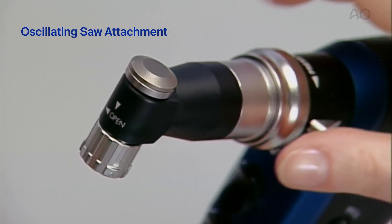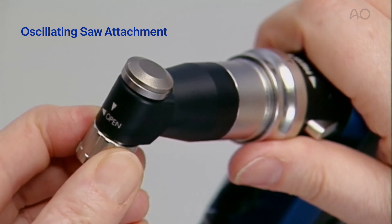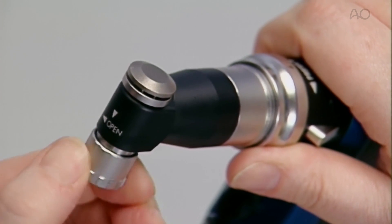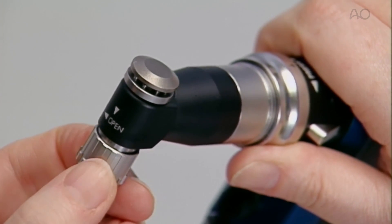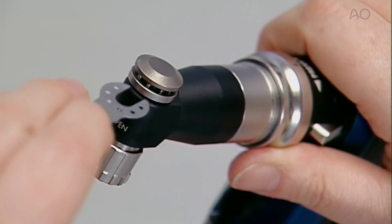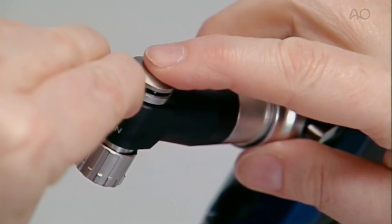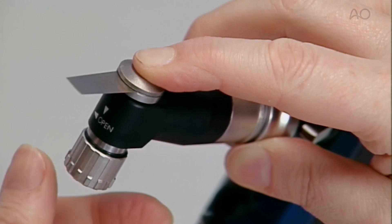To mount a saw blade in the oscillating saw attachment, the locking button is pulled down and rotated until the coupling is open. The blade is inserted in the required position, the coupling is pressed down, and the locking button is tightened.